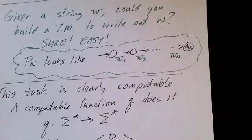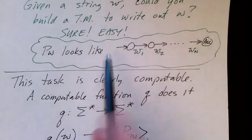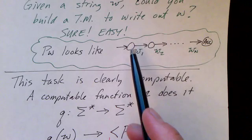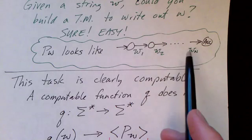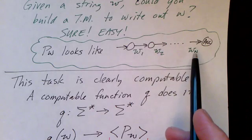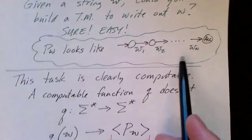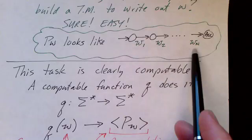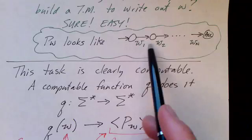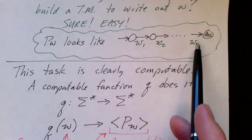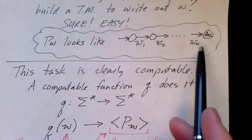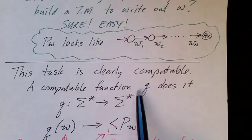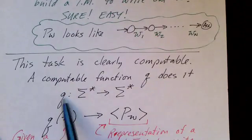Creating P sub W given W is really pretty straightforward. You could imagine creating an algorithm that is passed a string like W and creates the representation of a Turing machine that writes that string. Creating this Turing machine — or more precisely, creating a representation of this Turing machine given a string — is an easy task. It's clearly computable. We can name a function Q that does it.